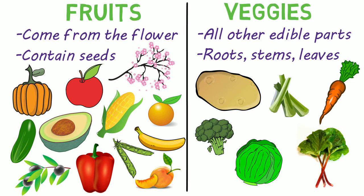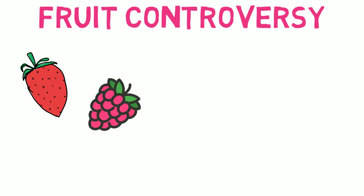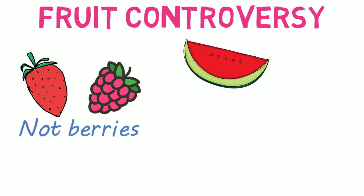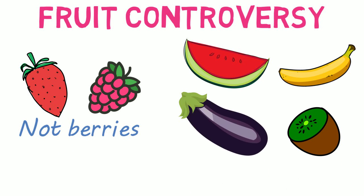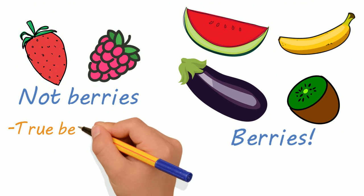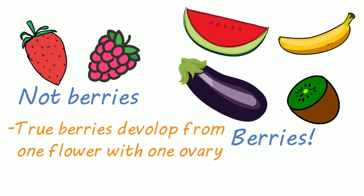And if that's not enough, there's even more controversy surrounding fruits. Strawberries and raspberries are not berries, but guess what are? Watermelon, bananas, kiwis, and eggplants, to name a few. To be a true berry, according to science, the fruit must develop from just one flower that has one ovary — and strawberries and raspberries violate this. I'll link some articles below that go into more depth on these topics, because it's pretty fascinating.